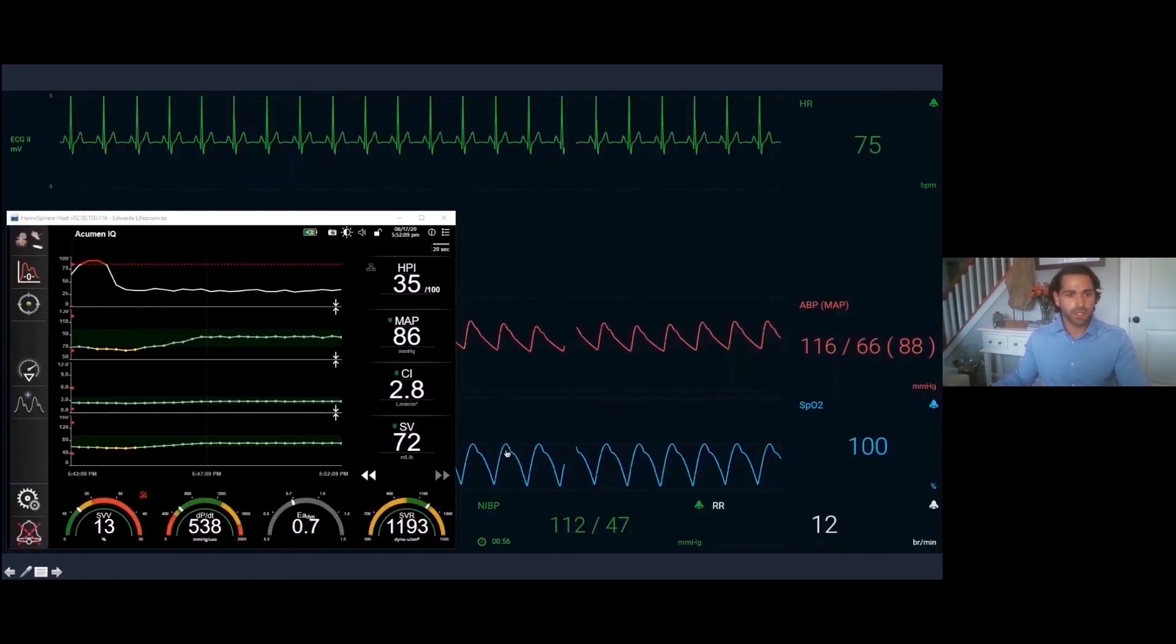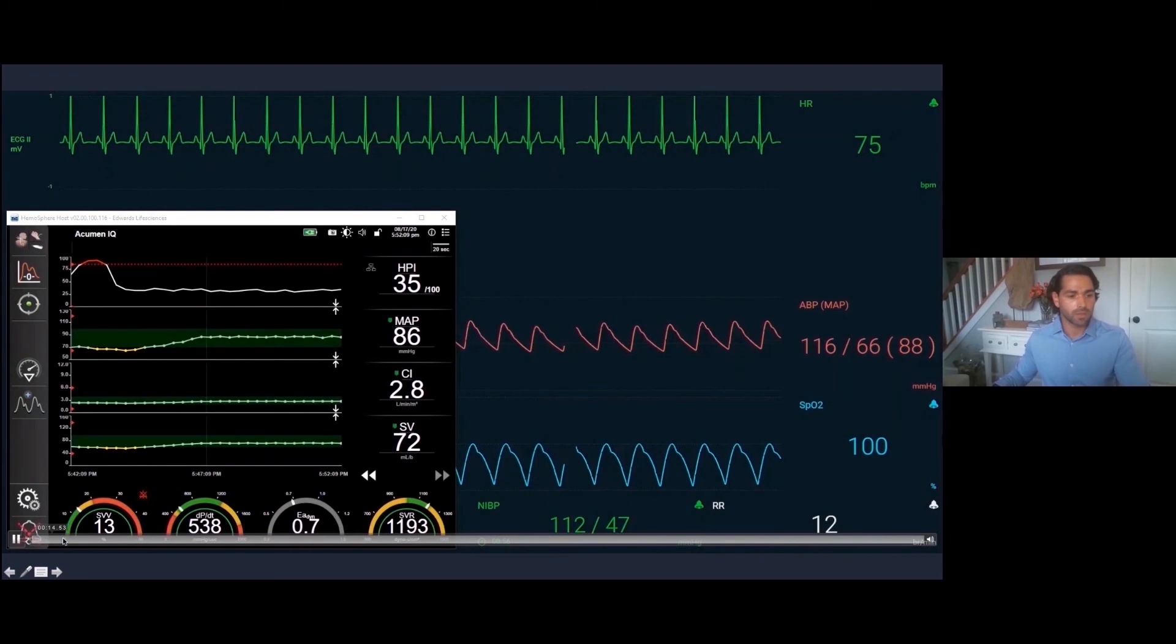Let's get into the simulation. The big screen here with our EKG and arterial waveform, our sats, and our surgery, this is normally what's going to be on your monitor in the ICU or operating room. This smaller screen is your Hemosphere. This is exactly what you're going to see. You see your HPI 35, your MAP, cardiac index, stroke volume, stroke volume variation, your DPDT contractility, your EADI volume responsiveness, and your SVR afterload.